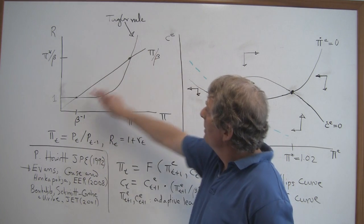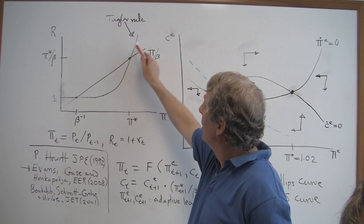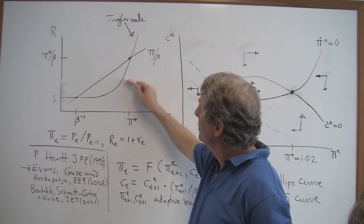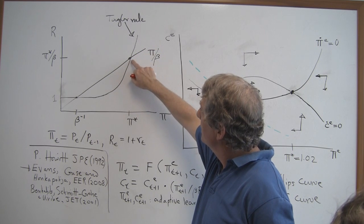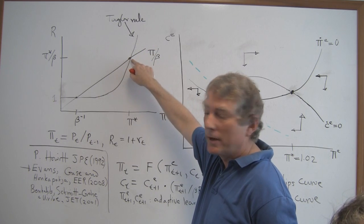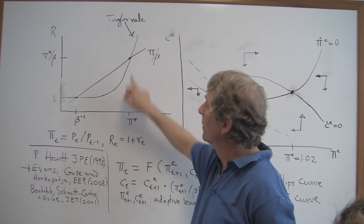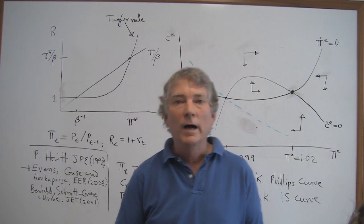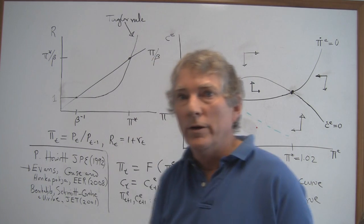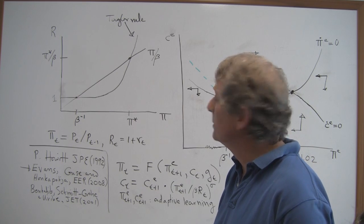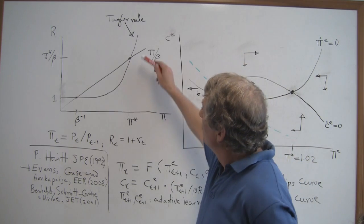So I've drawn in the Fisher line, R equals pi over beta, and the Taylor rule, and I've drawn in the Taylor rule so that there's active monetary policy at the target, pi star, so that interest rates are raised more than one for one with the changes in the inflation rate.